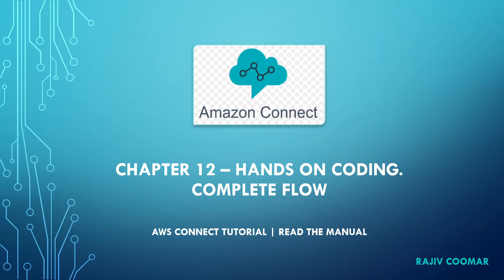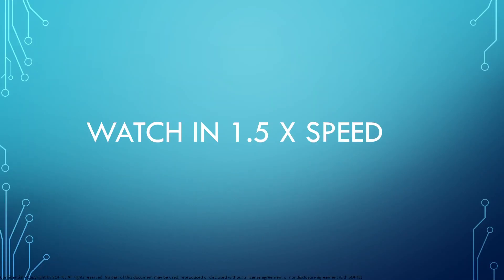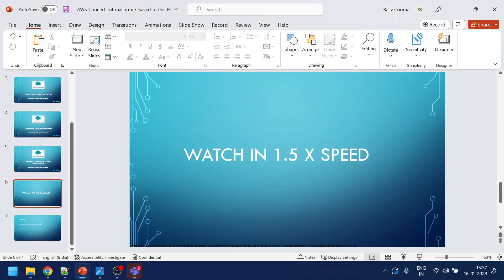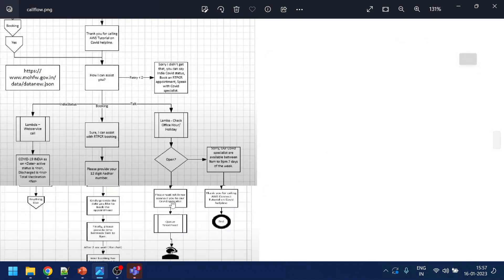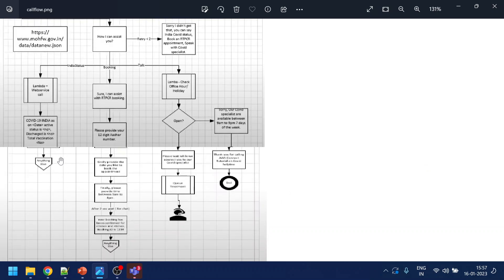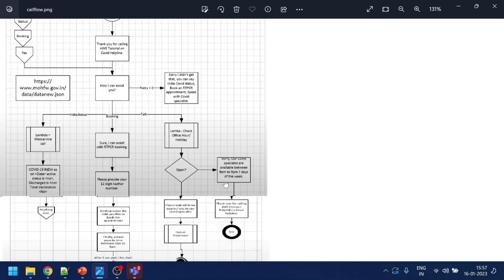Hi guys, in this video we will complete the code. Watch at 1.5 speed to save your time — I'm not using any editing tool. If we go back to our call flow, all the flows are already completed, but what you might have noticed is there is a section called 'anything else' that we should prompt to the user, but we are not doing anything like that.